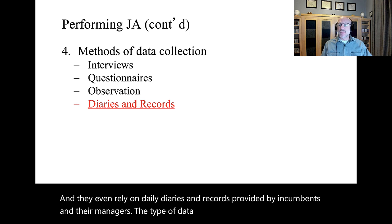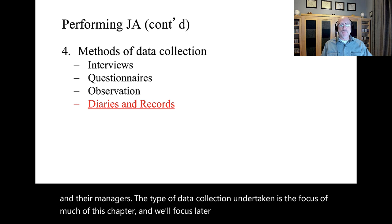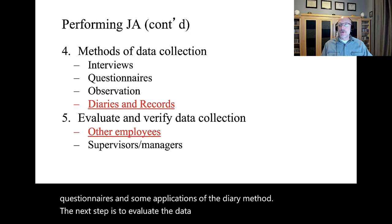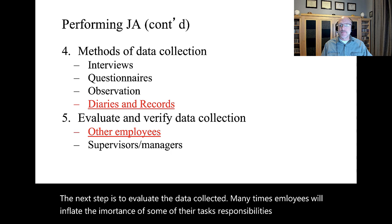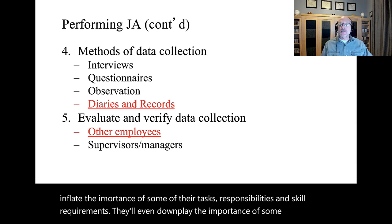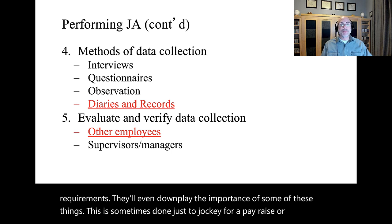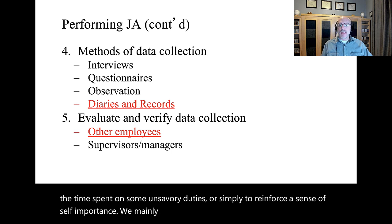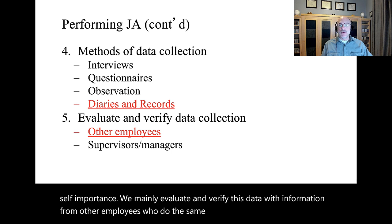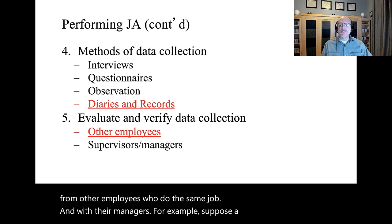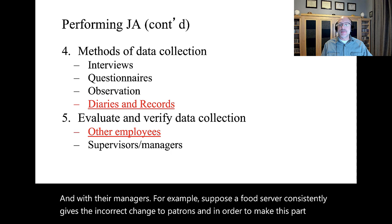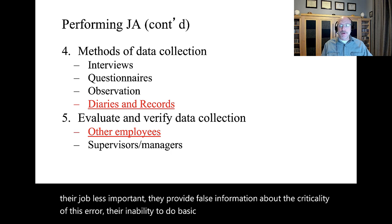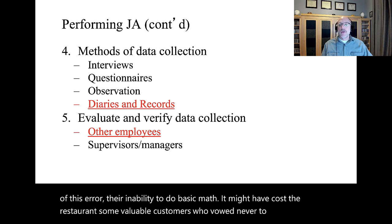The type of data collection undertaken is the focus of much of this chapter. The next step is to evaluate the data collected. Many times, employees will inflate the importance of some of their tasks, responsibilities, and skill requirements, or even downplay the importance of some of these things. This is sometimes done to jockey for a pay raise or to minimize time spent on unsavory duties or simply to reinforce a sense of self-importance. We mainly evaluate and verify this data with information from other employees who do the same job and with their managers. For example, suppose a food server consistently gives incorrect change to patrons and provides false information about the criticality of this error. Their inability to do basic math might have cost the restaurant valuable customers who vowed never to come back.